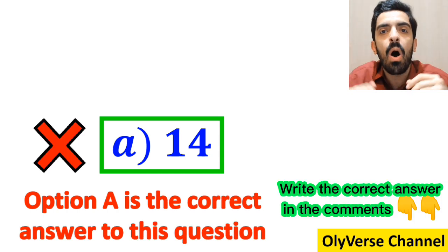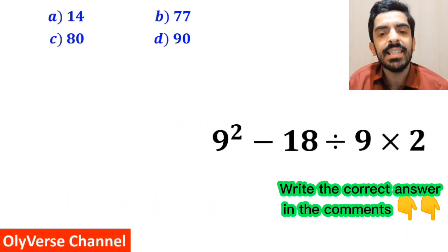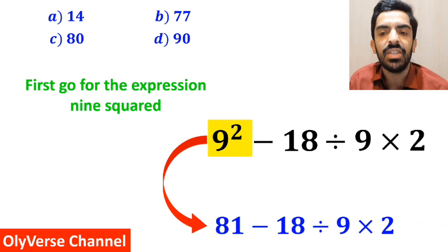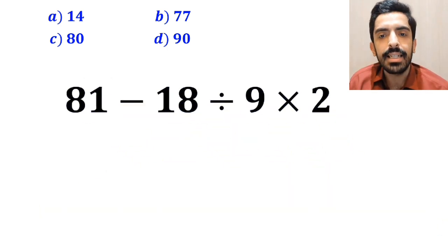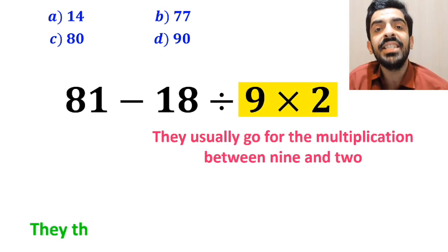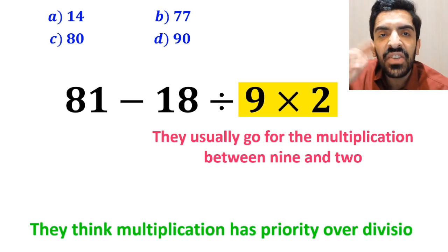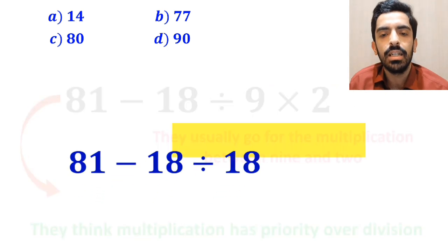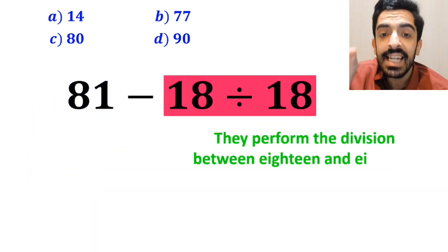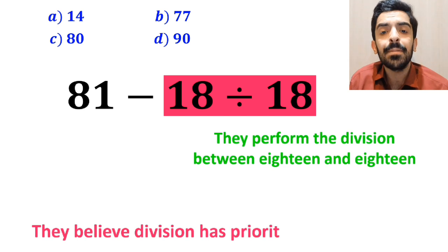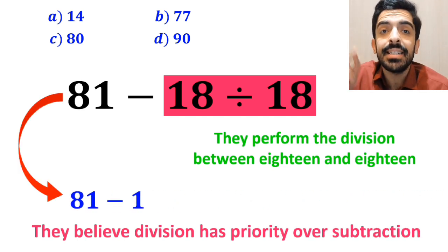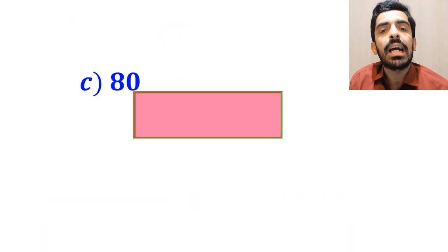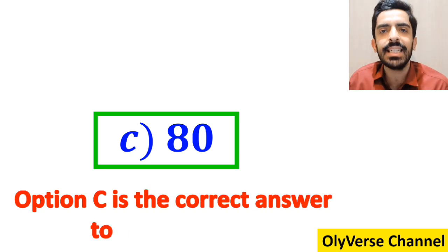Some other people first simplify 9 squared to get 81 minus 18 divided by 9 times 2. In the next step they go for the multiplication between 9 and 2 because they think multiplication has priority over division, deriving 81 minus 18 divided by 18. Next they perform the division, getting 81 minus 1, which gives them 80, and conclude that option C is the correct answer. However, that's not correct either.